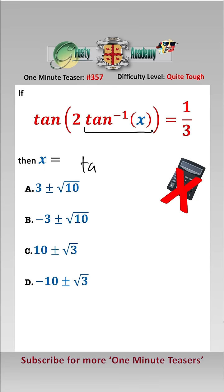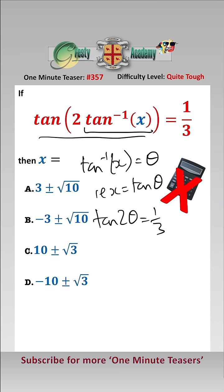Let's let tan to the minus 1 of x equals theta, i.e. x equals tan theta, so we can rewrite this thing as tan of 2 theta equals a third.